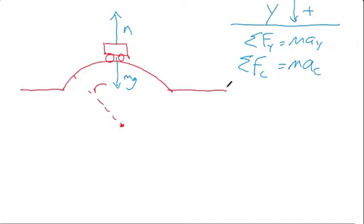That is going to be mg minus N equals mv squared over r. When it asks for the apparent weight, we just solve for N: mg minus mv squared over r equals N.